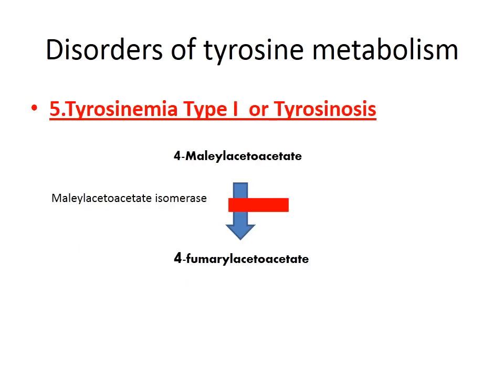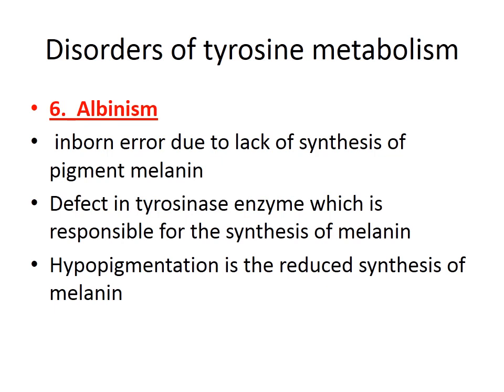Fifth is tyrosinemia type 1 (tyrosinosis), where conversion of maleylacetoacetate to 4-fumarylacetoacetate is blocked due to deficiency of the enzyme isomerase. Sixth is albinism — an inborn error due to lack of synthesis of the pigment melanin. A defect in the tyrosinase enzyme, which is responsible for melanin synthesis, leads to hypopigmentation — reduced synthesis of melanin — a condition called albinism.